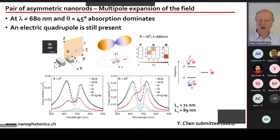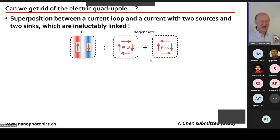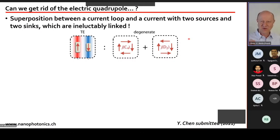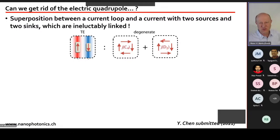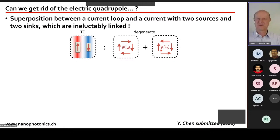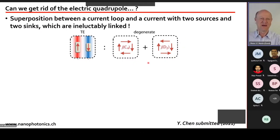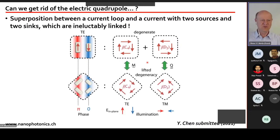There has been confusion about the difference between a true magnetic dipole — a complete loop of current going around the structure — and an electric quadrupole, which almost forms a loop but pulses back rather than completing the circuit. These two modes are degenerate in this system. To remove the degeneracy and achieve a pure magnetic response, we need a different geometry.